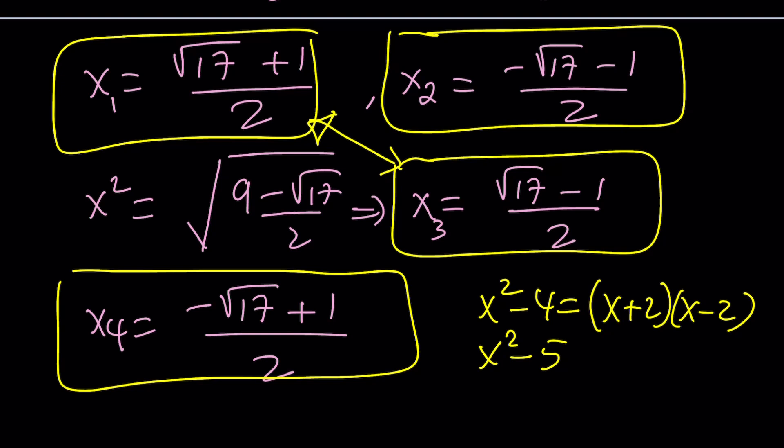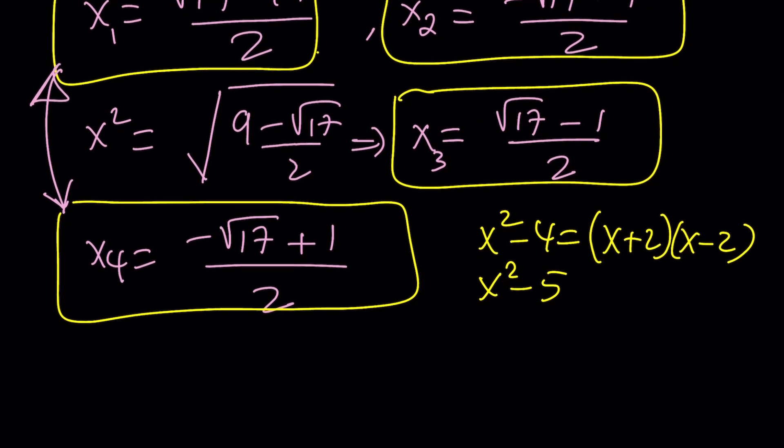let's go ahead and pair them up a little differently. How about this one? Let's pair these two up, because then the root 17 is going to cancel out, right? So, if we do that, let's see what happens.